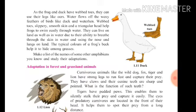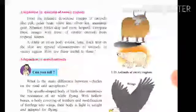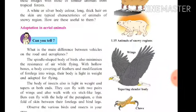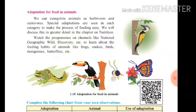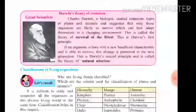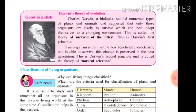Today we have to discuss the adaptation in desert animals, then adaptation in snowy region, aerial animals, adaptation in reptiles, and adaptation for food in animals. We will also see how animals adjust with their surroundings — that is adaptation for blending with surroundings. Then we will look at the great scientist Darwin's theory of evolution and his two theories for survival of the fittest.